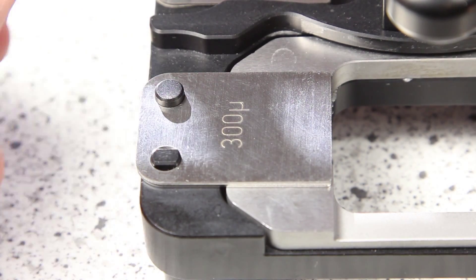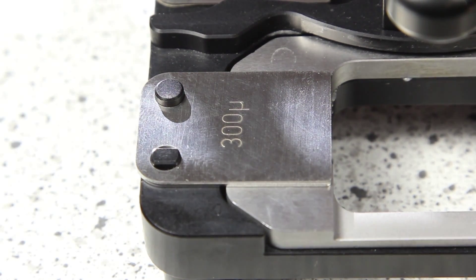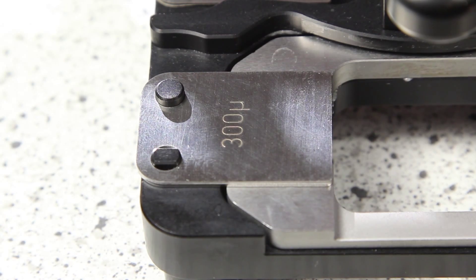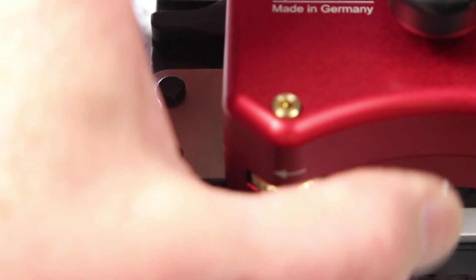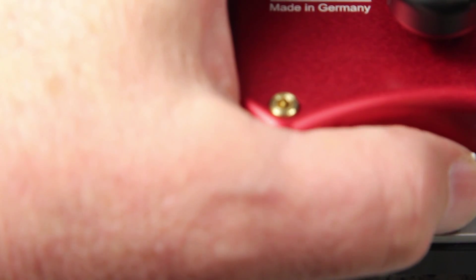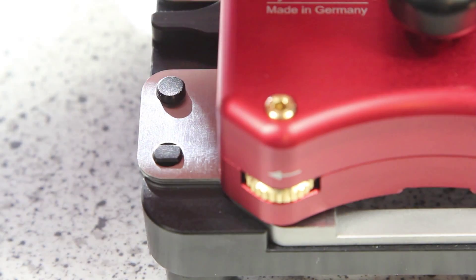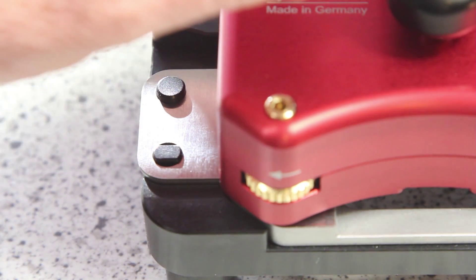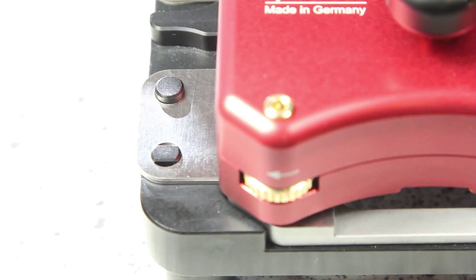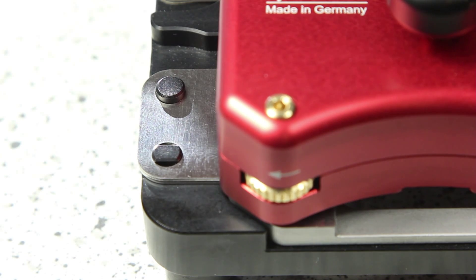I again turn back the feet completely and I put it into the setting device. I close and now I adjust to 1300 microns.